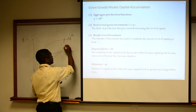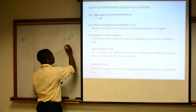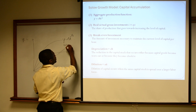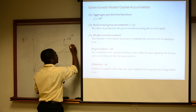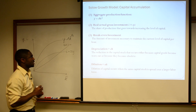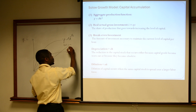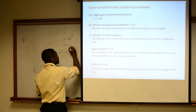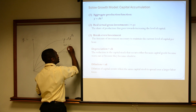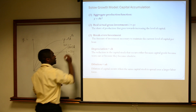Because D and N are just constants, our break-even investment line is just a straight line — it's a linear function. We're going to call it BEI, break-even investment: that's just D plus N times K.